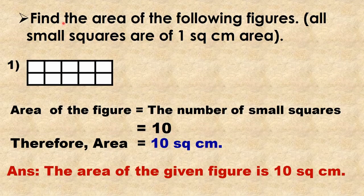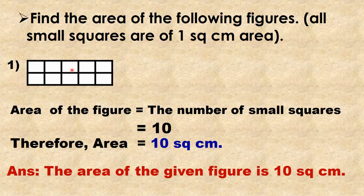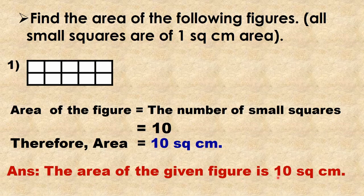Find the area of the following figures. All small squares have an area of 1 square cm. Here is a rectangular piece of paper divided into squares with side 1 cm. To find the area, count the number of squares. Counting: 1, 2, 3, 4, 5, 6, 7, 8, 9, 10. There are 10 squares. Therefore, the area is equal to 10 square cm. The area of the given figure is 10 square cm.